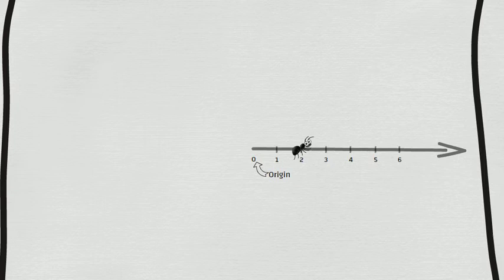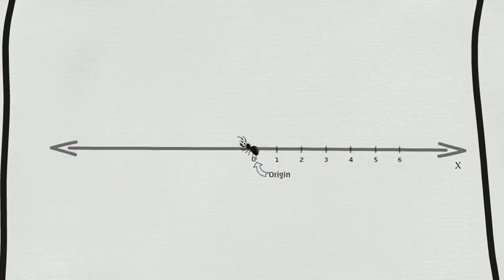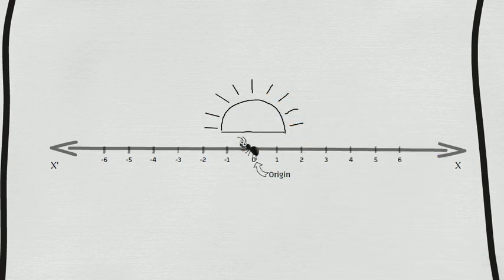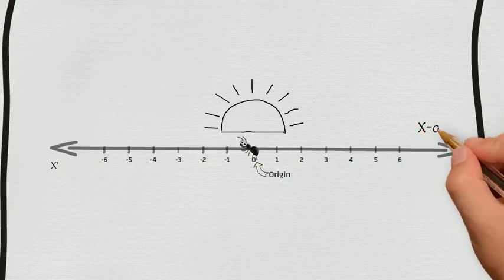To make it easy, we can call this direction as x. If the little ant decides to turn around on the origin and go in the opposite direction, we can name this direction as x prime and use negative numbers to mark this distance on the line. Now we get a line with two arrow heads. It's like a side-to-side horizontal line where the sun rises from. So we call it the horizontal axis, or x-axis.